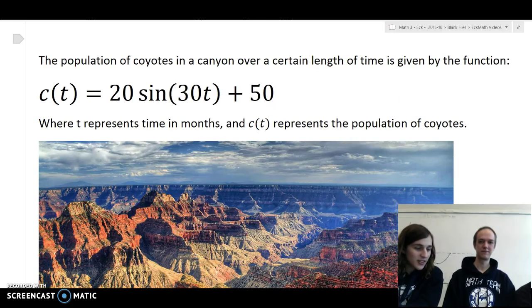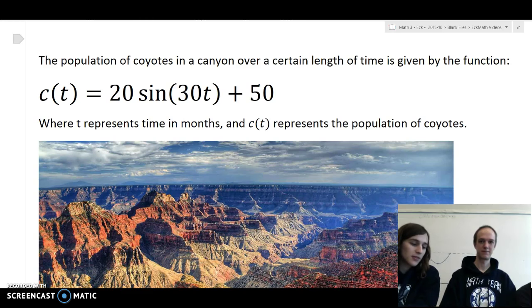The population of coyotes in a canyon over a certain length of time is given by the function c of t equals 20 sine 30t plus 50, where t represents the time in months, and c of t represents the population of coyotes.